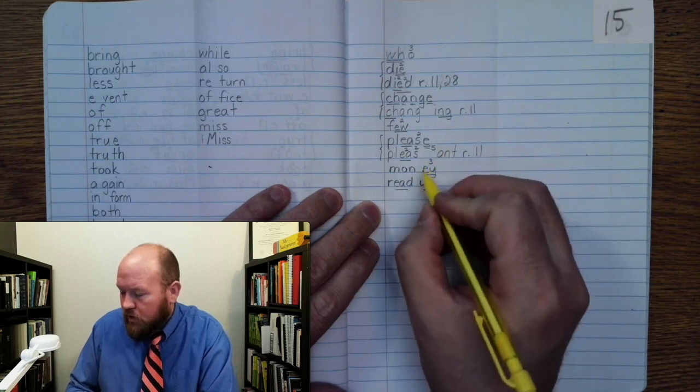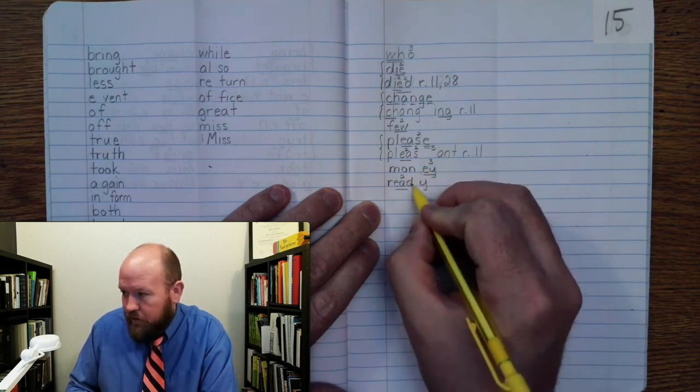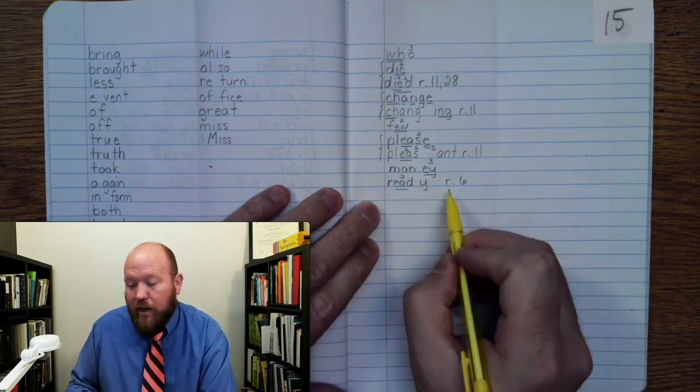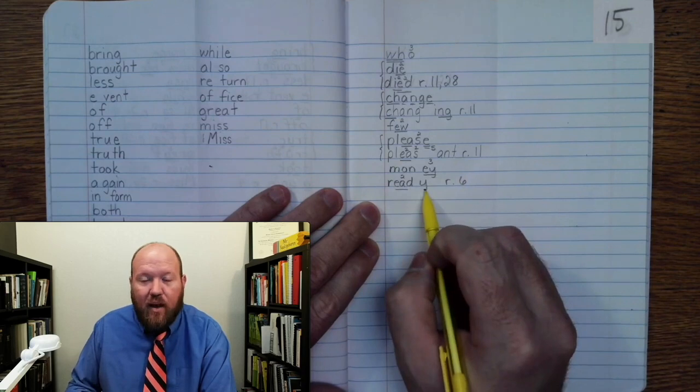Two, D, I. Rule six: English words don't end in I, so I use EY.